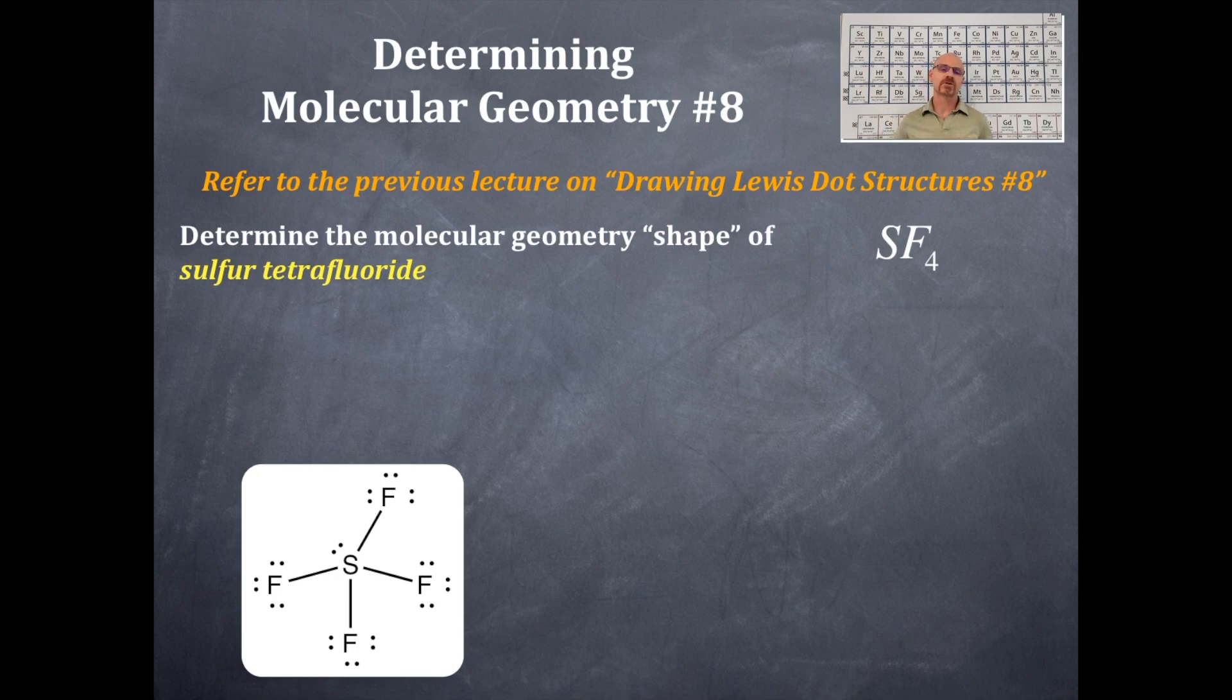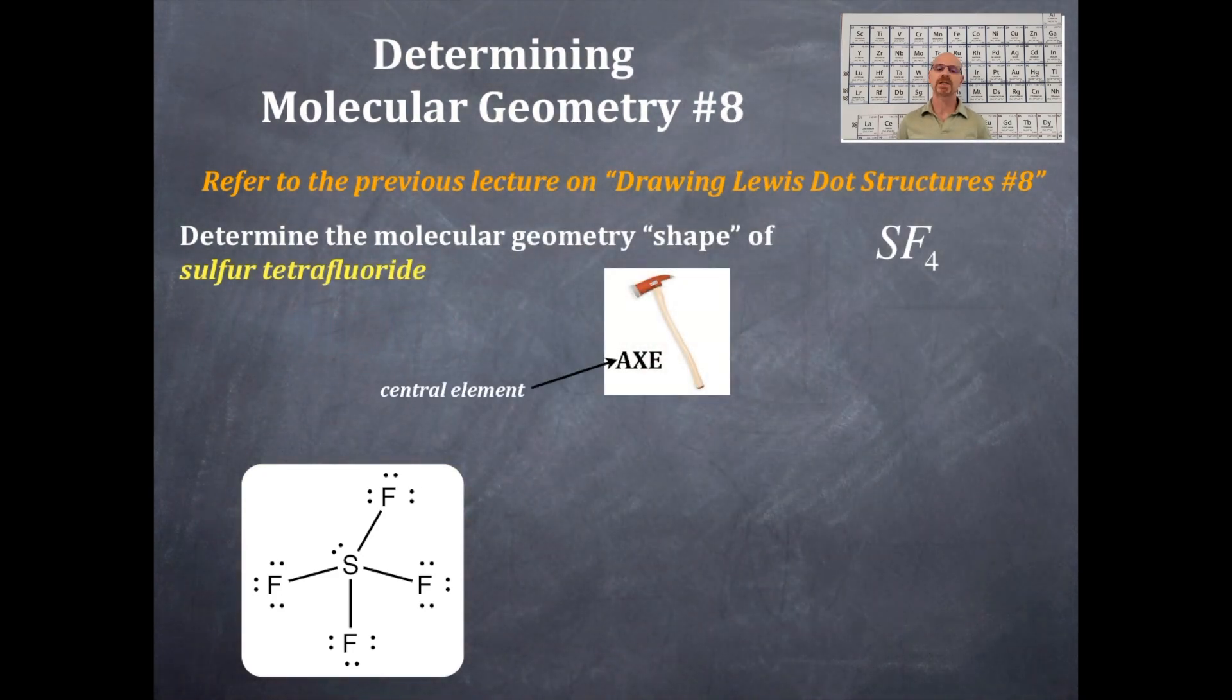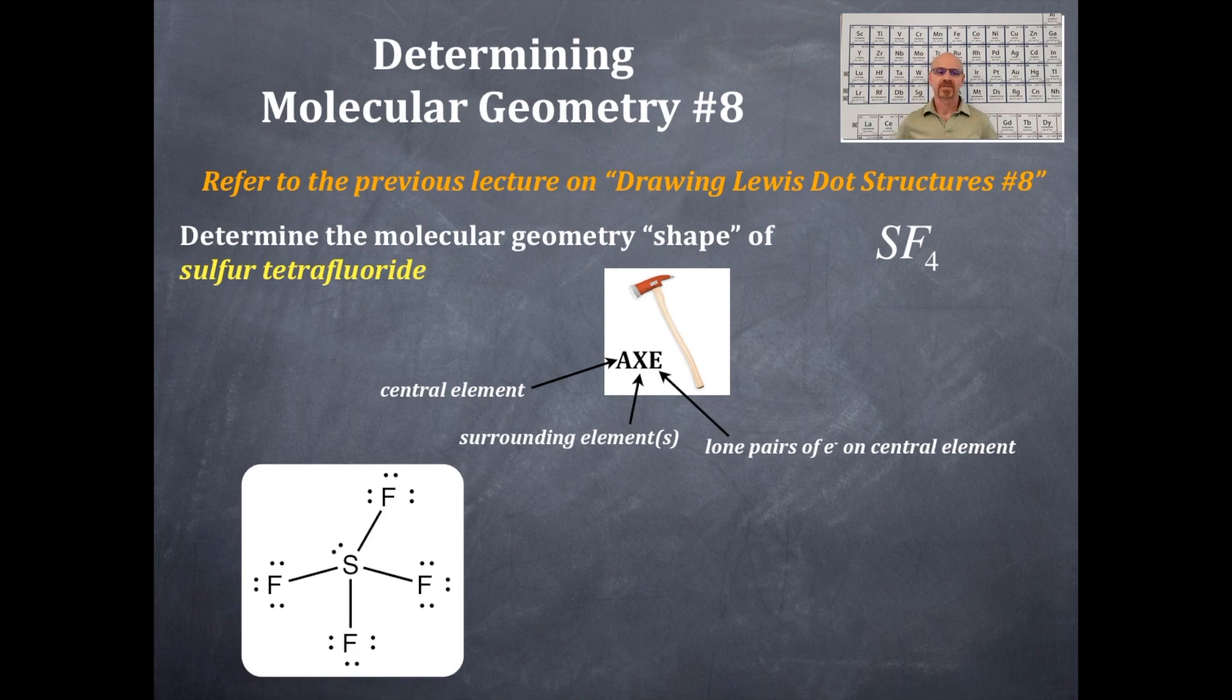There's the Lewis dot structure in the lower left-hand corner there to refresh your memory. And we are following the rules of the AXₑE. The central element A is going to be the sulfur. And then the X is how many bonding regions around the sulfur. I see one, two, three, and four fluorines around that central region there.